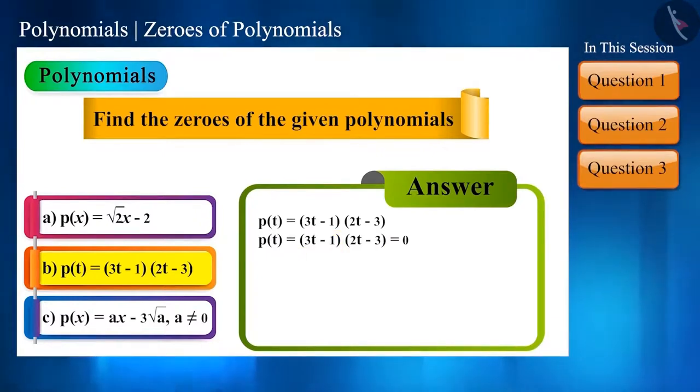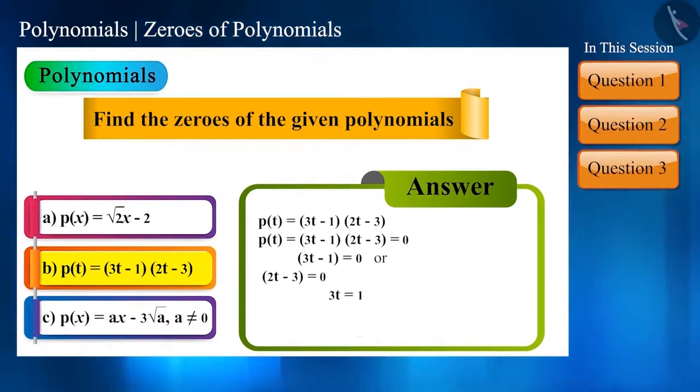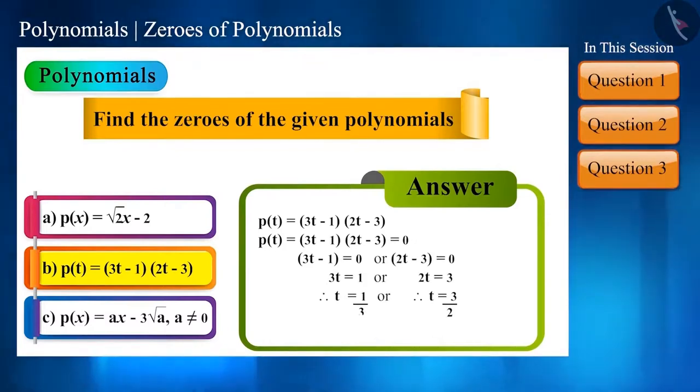That means, 3t - 1 = 0 or 2t - 3 = 0. That is, t is either 1/3 or 3/2.